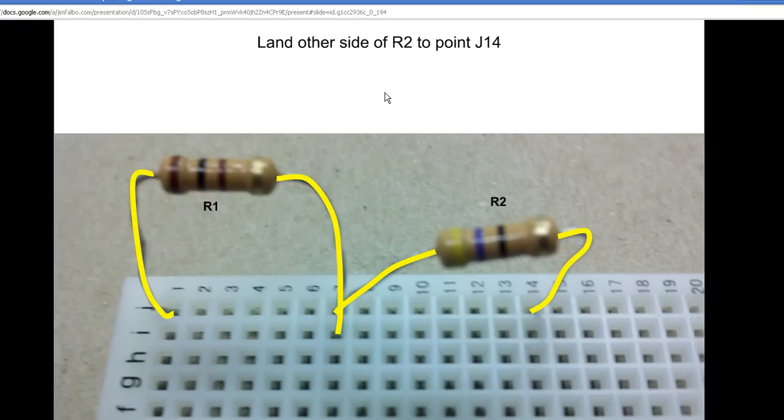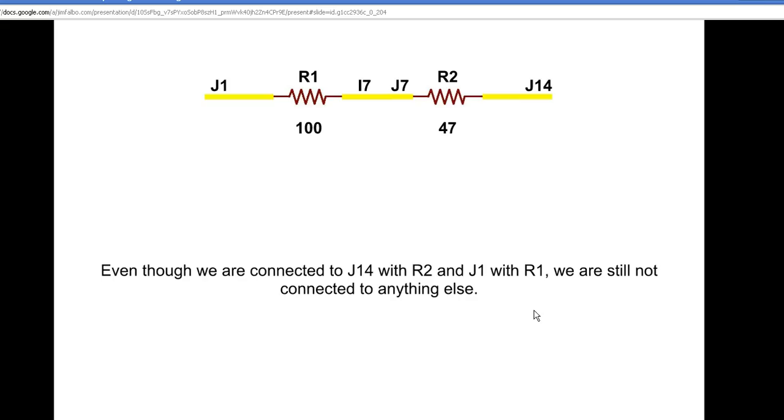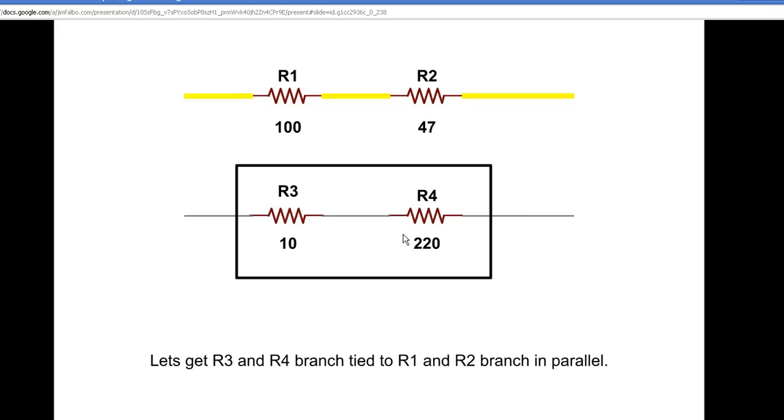I'm going to land the other leg of R2 to J14. Here's J14. I'm going to highlight that connection and reference that point right here. Now we want to create our next series circuit—that's R3 in series with R4.